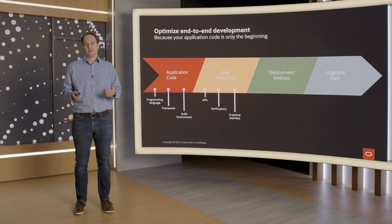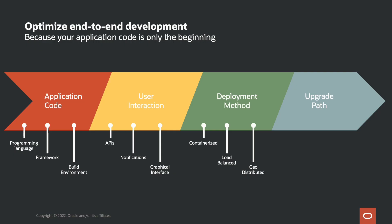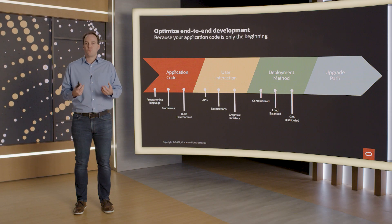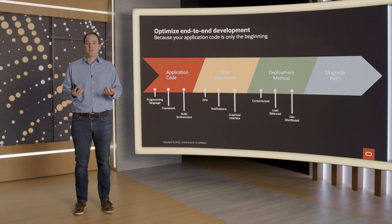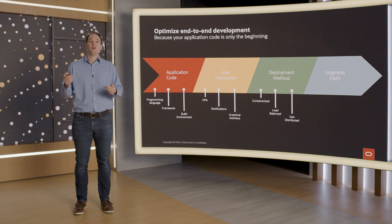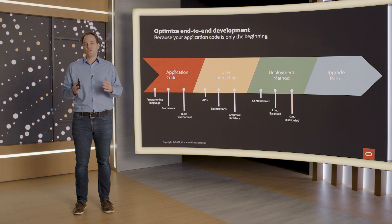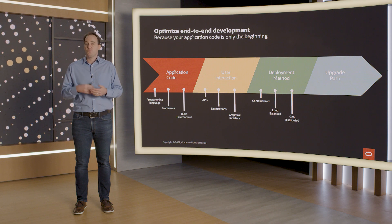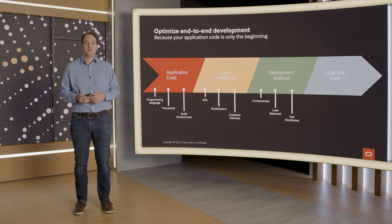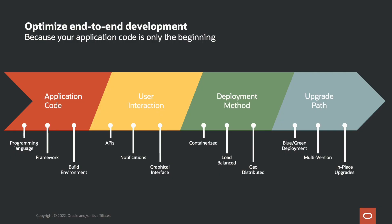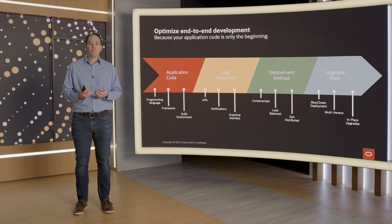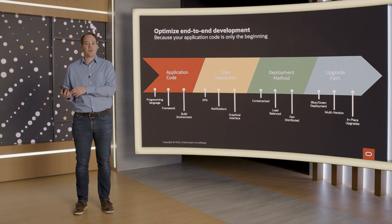It goes even further — the deployment method is something to consider as well. How do you want to deploy this? Do you want to containerize it, load balance your application, and is your application geodistributed? If it has to run in parallel on a geodistributed nature with everything being stateless, you have to factor that statelessness into the application. And last but not least, what's your upgrade path? Do you want to do blue-green deployment, run multiple versions at the same time, or do an in-place upgrade in real time without any outage? All of these things are very important to consider during your design process so that they don't come back later to bite you.